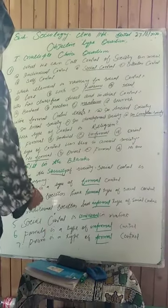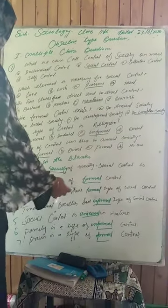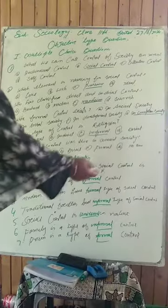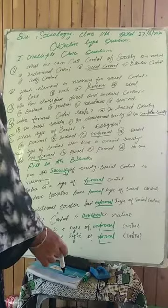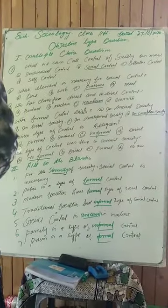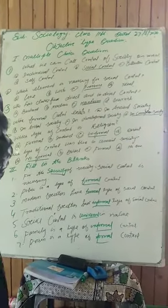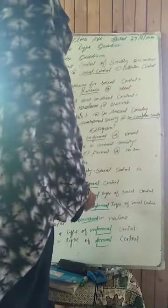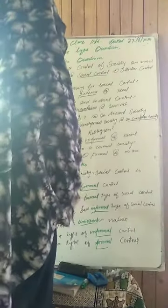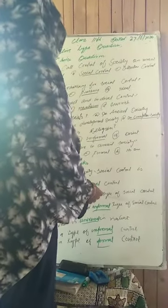Next: modern societies have blank type of social control. Joh modern societies hain, in mein control ka kaunsa type lagu hota hai? The answer is formal. Modern societies mein formal type of control hota hai.